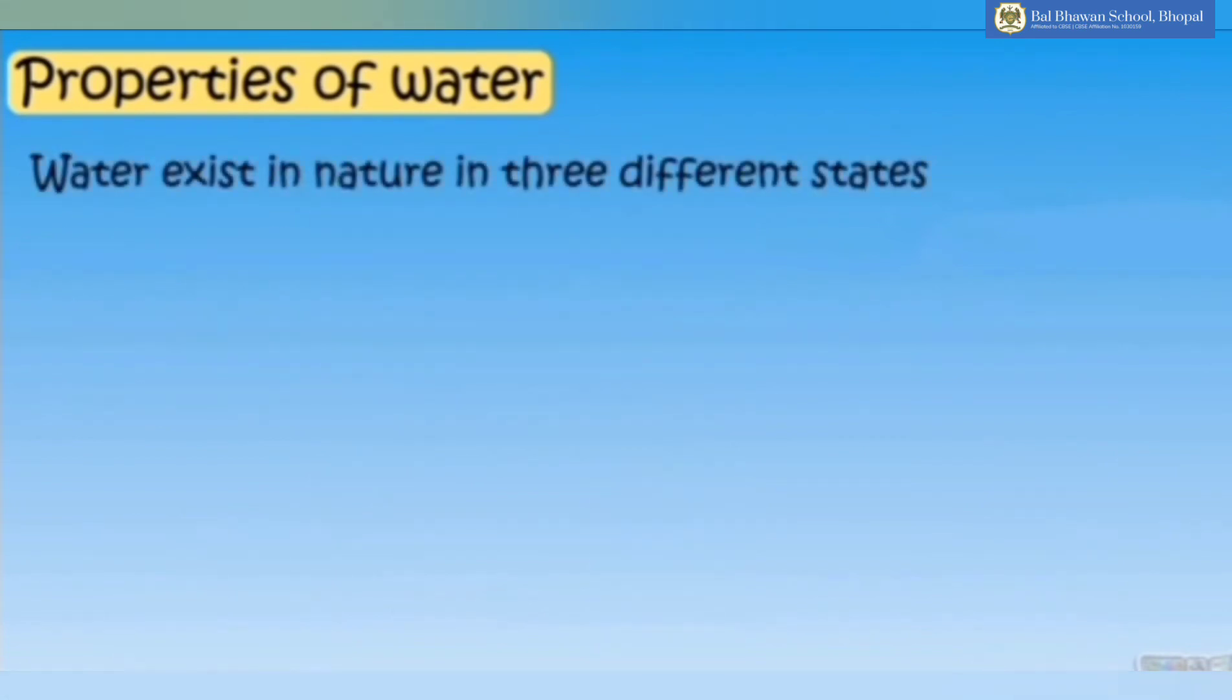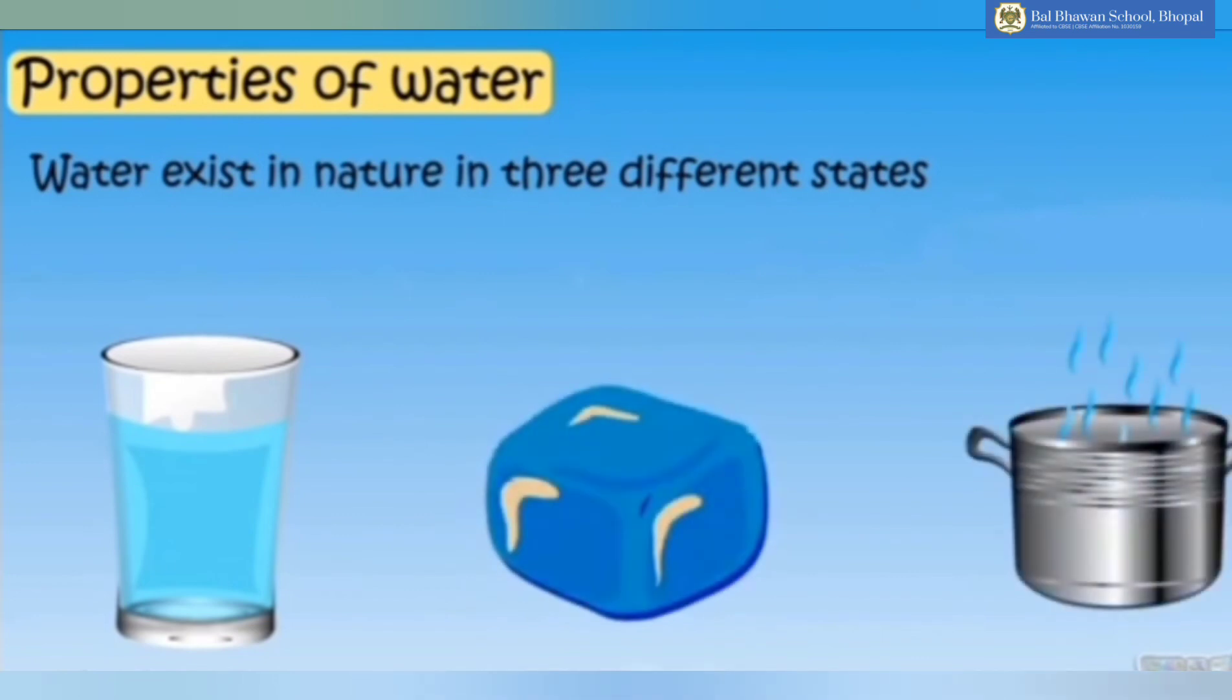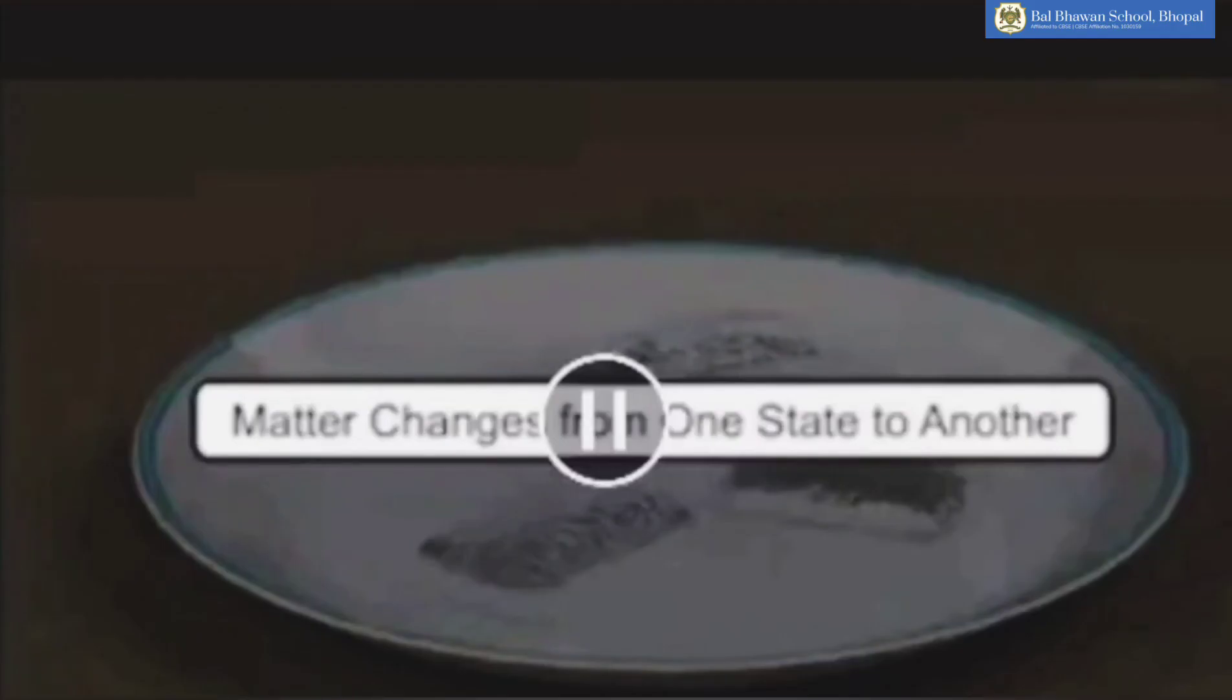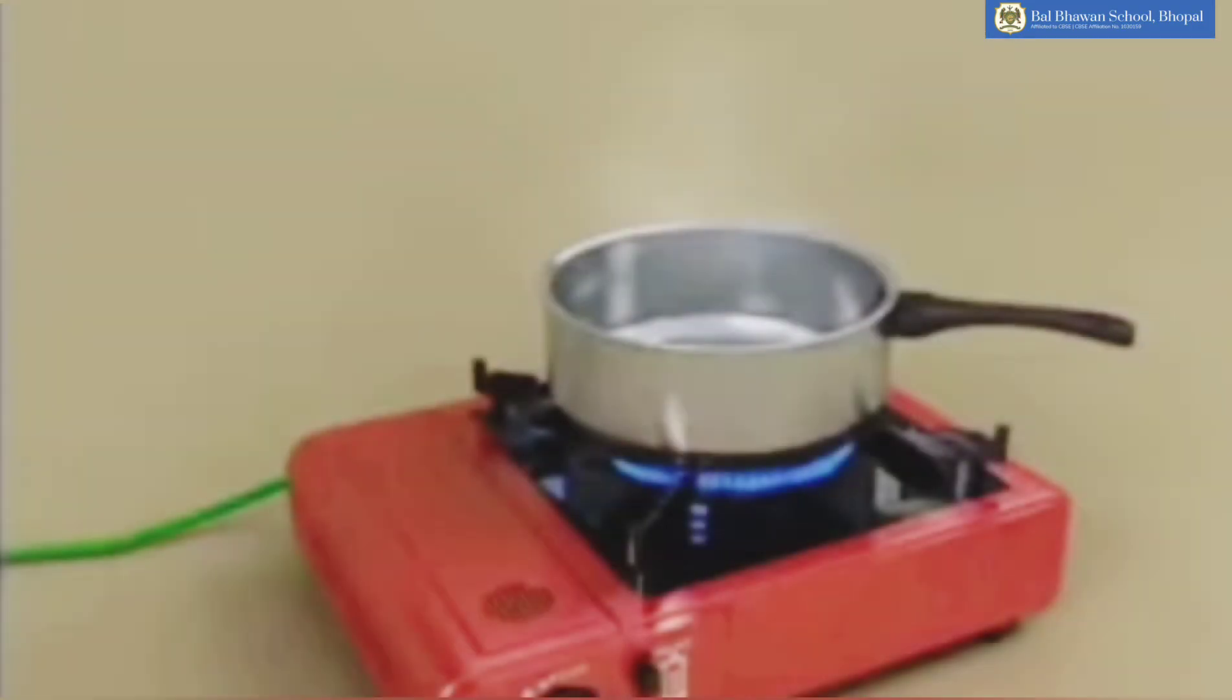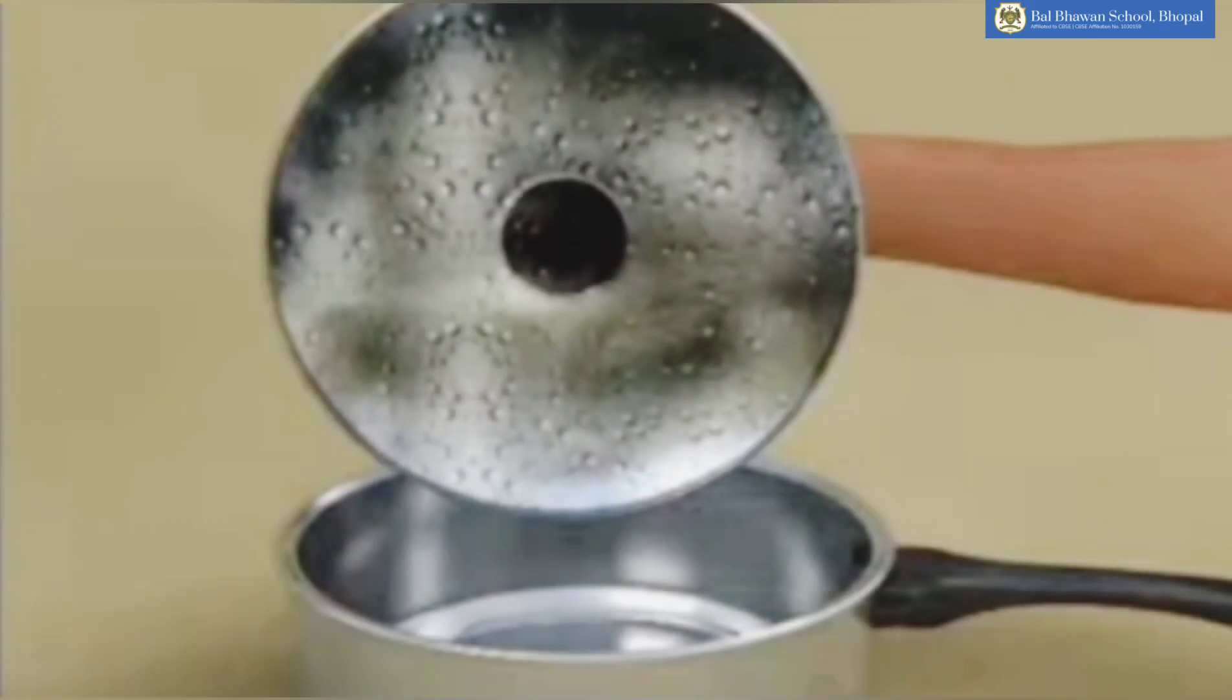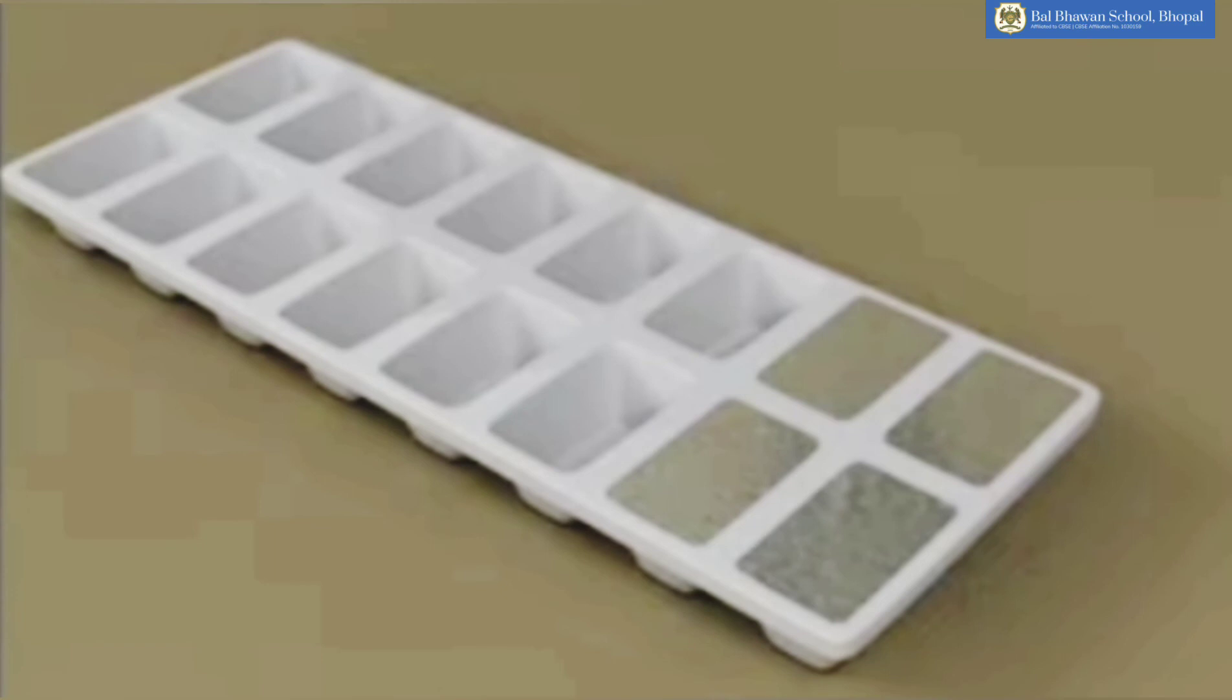Water exists in nature in three different states or forms: liquid, solid and gaseous form. Let us see the changes in the form of water. Ice on melting becomes water. This liquid water when heated becomes vapors or water vapors. Water vapors turns into water droplets again on hitting a cool surface. When we freeze water, it becomes ice which is solid form of water.